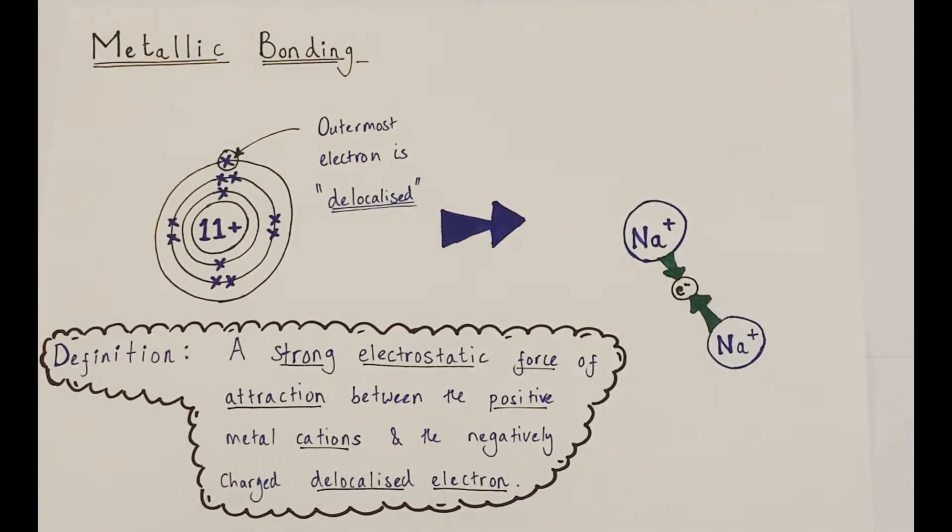And that outermost electron can be delocalized from this sodium atom's outer shell and move into the outer shell of a neighboring sodium atom, which would be located over here somewhere. And this is my image of two sodium cations being attracted towards that negatively charged delocalized electron between them. And that's the key aspect of a metallic bond.